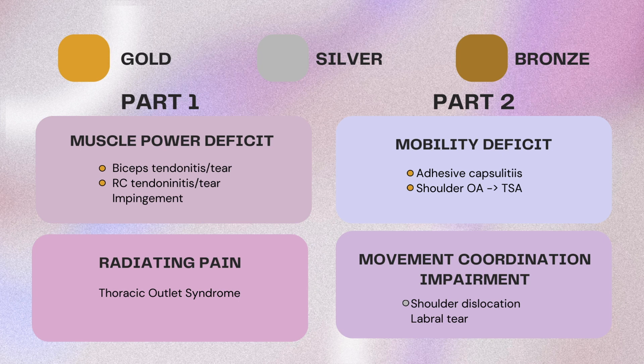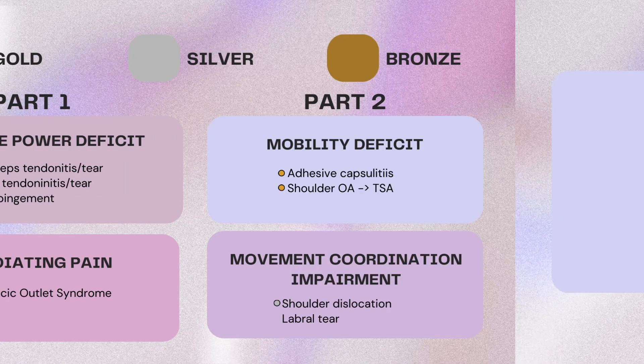Adhesive capsulitis, shoulder OA, and total shoulder arthroplasty are highly tested on boards. Shoulder dislocation is seen a little bit less but still important. Labral tear is something we should discuss but not necessarily one of the top three things that Score Builders sees on boards.